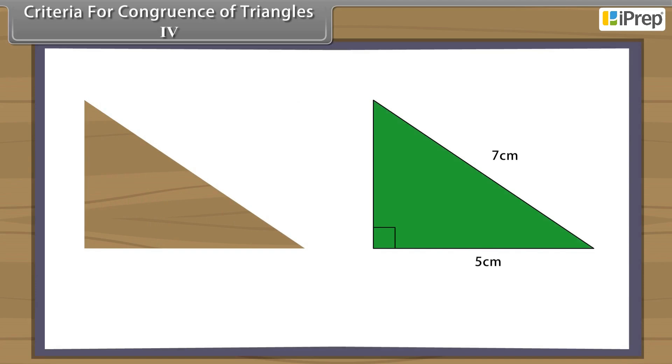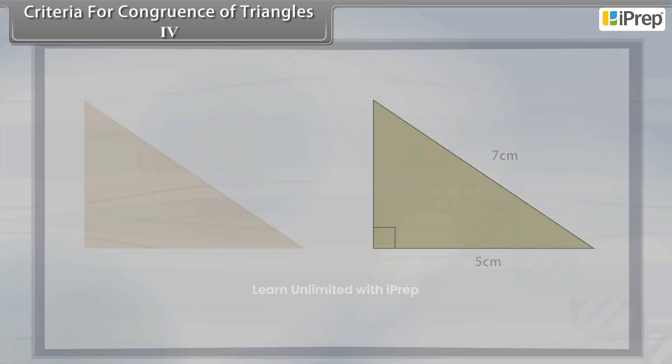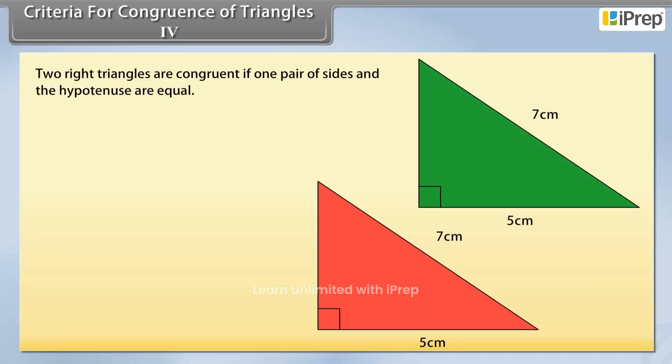We will observe that the two triangles cover each other completely and so they are congruent. Or we can say that two right triangles are congruent if one pair of sides and the hypotenuse are equal.